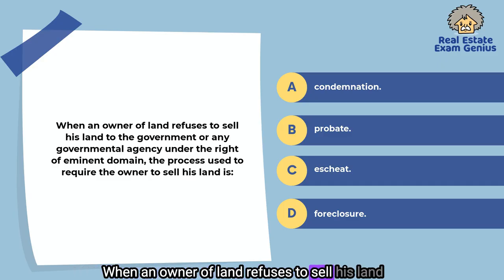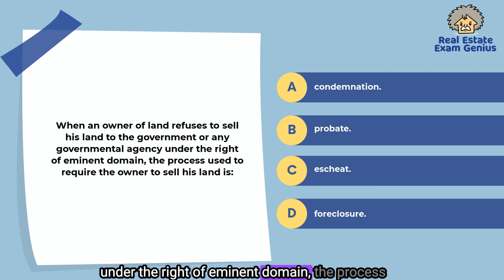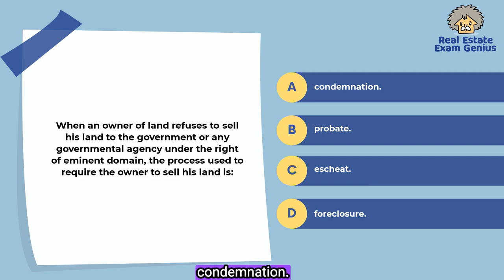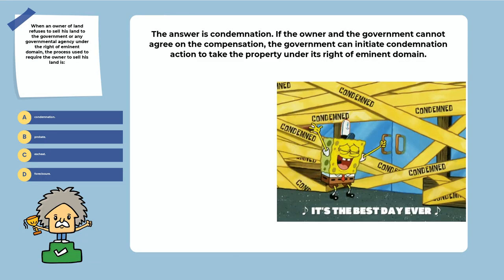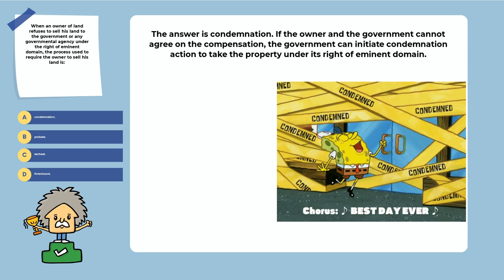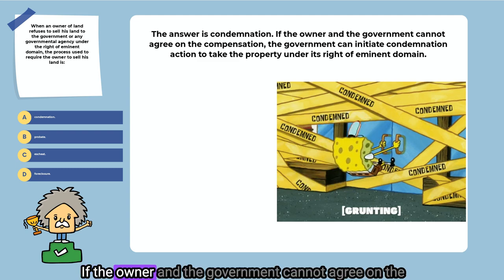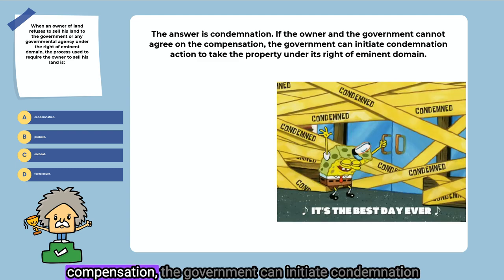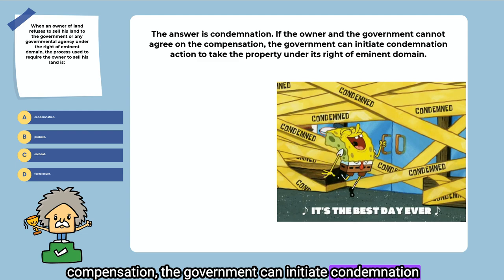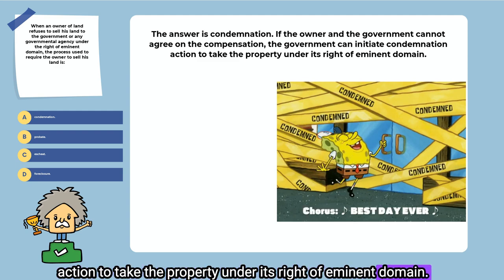When an owner of land refuses to sell his land to the government or any governmental agency under the right of eminent domain, the process used to require the owner to sell his land is: condemnation, probate, escheat, or foreclosure. The answer is condemnation. If the owner and the government cannot agree on the compensation, the government can initiate condemnation action to take the property under its right of eminent domain.